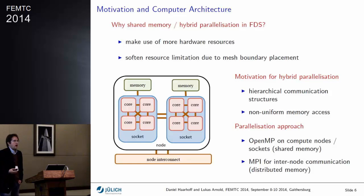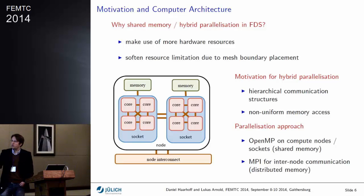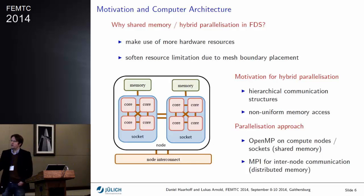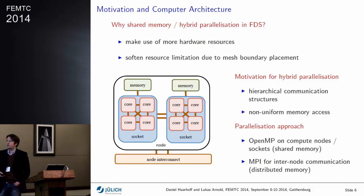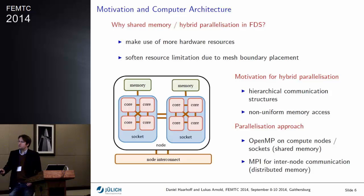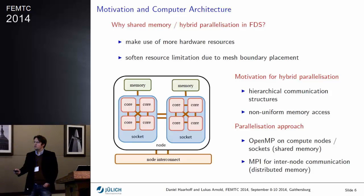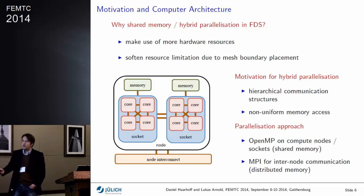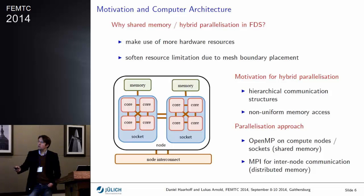So there's a natural hierarchy in this system: the shared memory communication mechanisms, and the distributed memory communication which uses the network — InfiniBand, 10 gigabit Ethernet, or whatever you've got. There exist two approaches to make use of this hierarchy. On one hand, OpenMP, which you can run on compute nodes — in general on each socket. And MPI for the inter-node communication.